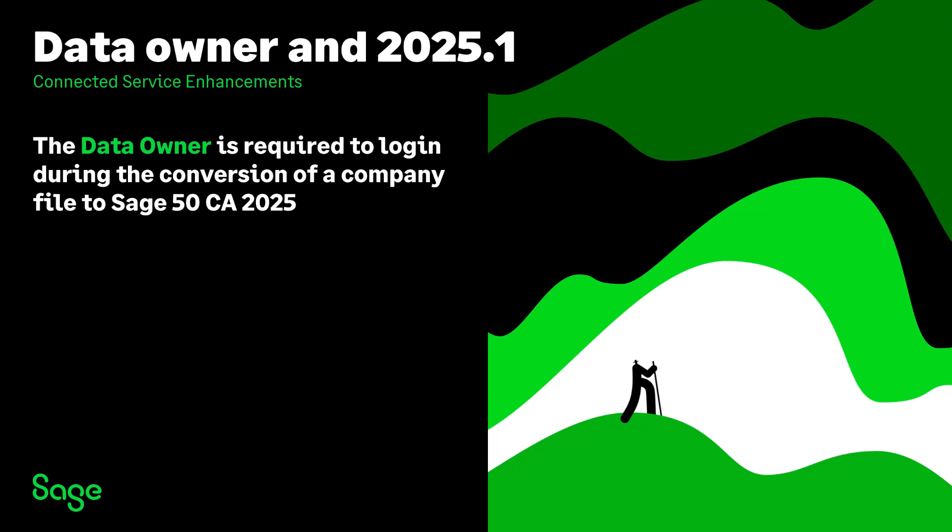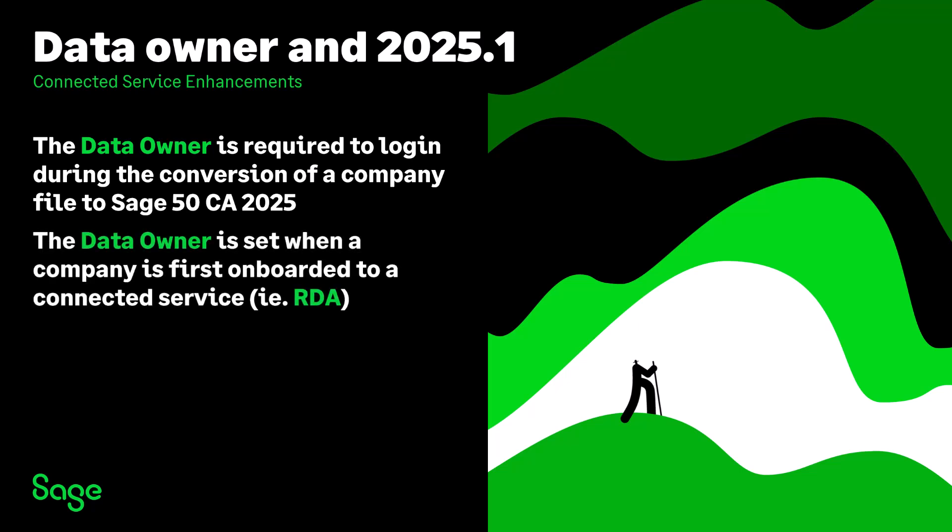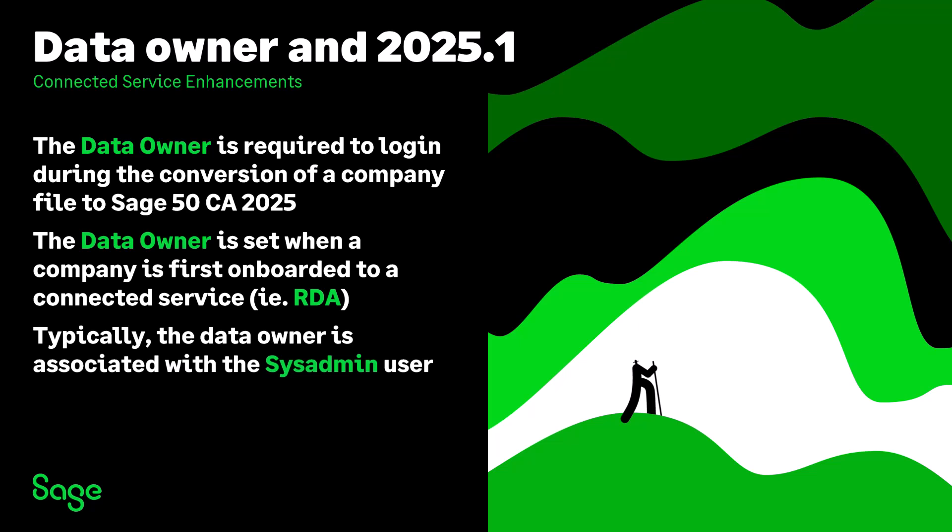During the conversion of a Sage 50 company to either 2025 or 2025.1, one of the requirements is to log in as the data owner. The data owner was set when the company file was first onboarded. Onboarding occurs when you use Sage 50 with a connected service like RDA. Typically, the data owner is associated with the sysadmin user. The conversion process requires a data owner to log in with their credentials to ensure the data owner is the person converting the company file.